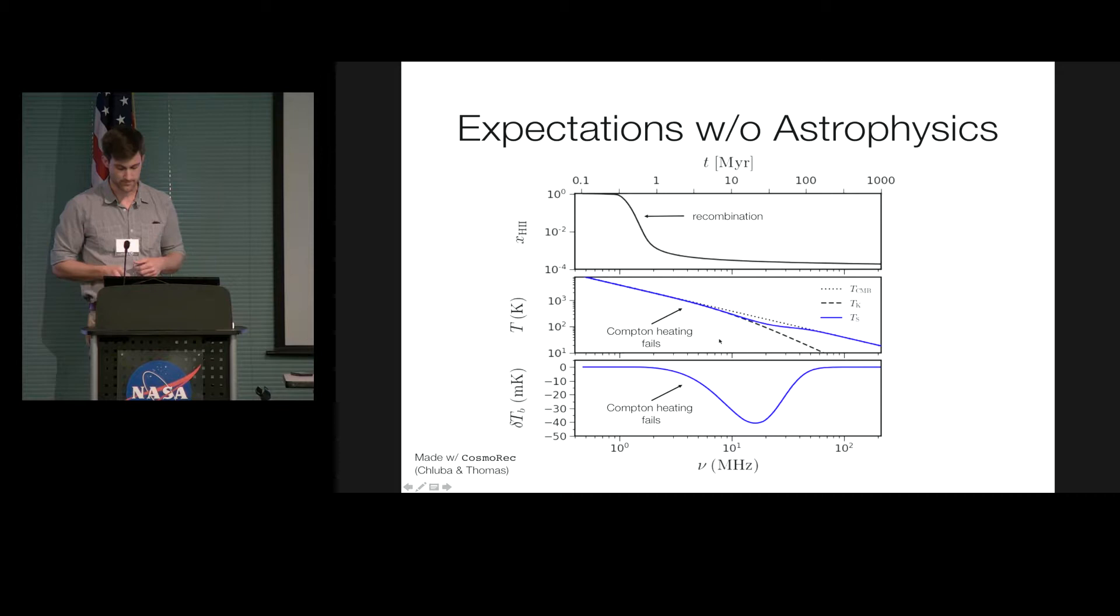So just collisions between hydrogen atoms can force the spin temperature to be the kinetic temperature. And so we should see a dip in the sky-averaged brightness temperature just due to this decoupling. But the universe keeps expanding. It's going to keep expanding and keep expanding. And so those collisions eventually become negligible as well, and the signal tends back towards zero. So this is a bit of a long-winded preamble. But I think it's necessary to describe what I'll say next, which has to do with edges.